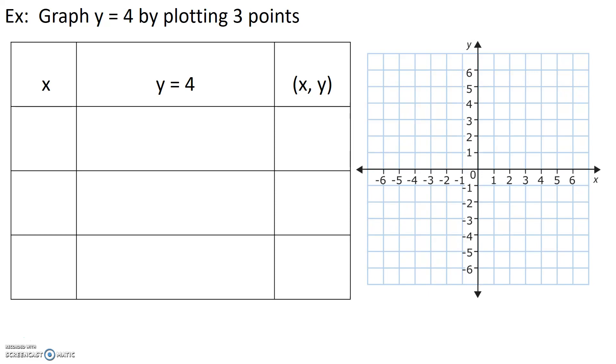Let's graph the equation y equals 4 by plotting three points. Now notice that in the equation y equals 4, the variable x doesn't exist. What it means is that this line y equals 4, its value is unaffected by the x. So we could pick the x's to be whatever we want it to be.